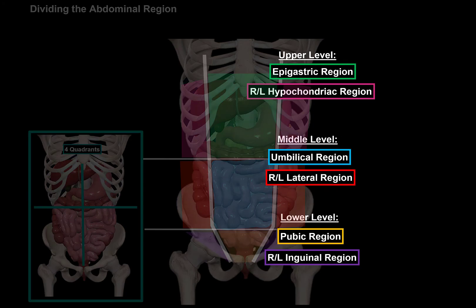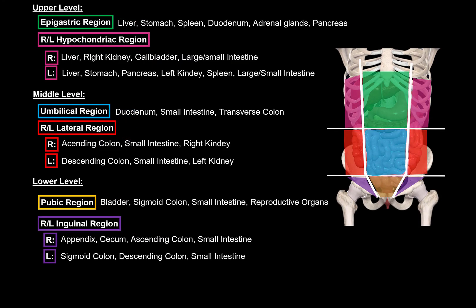Here I've added a list of all organs you will find within these nine regions. And with that being said, let's go through the detailed anatomy of all the organs in the abdominal cavity.